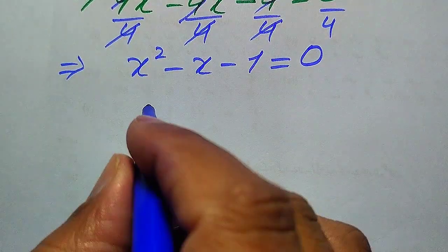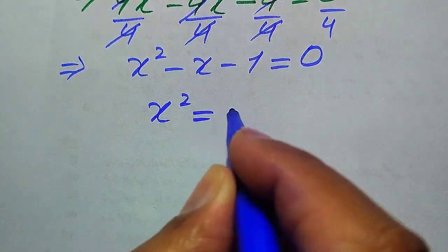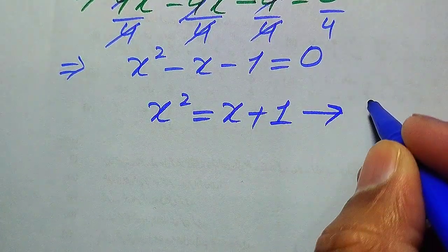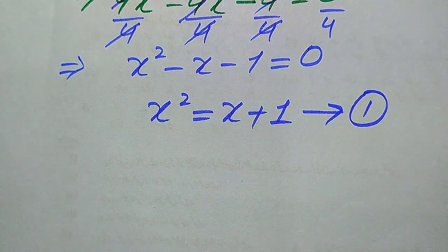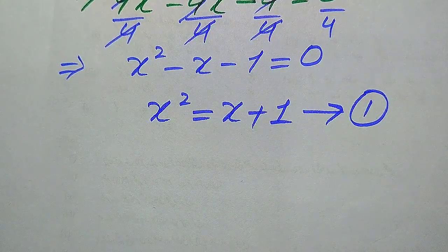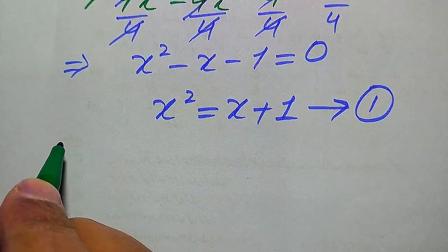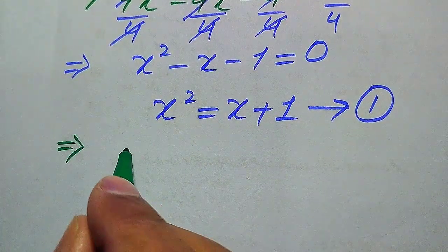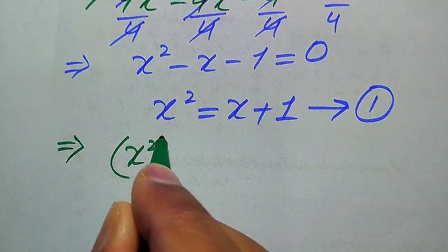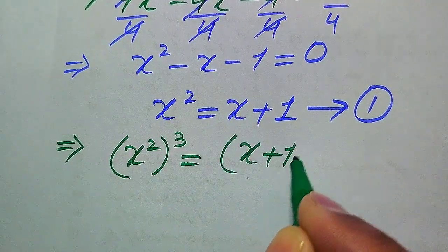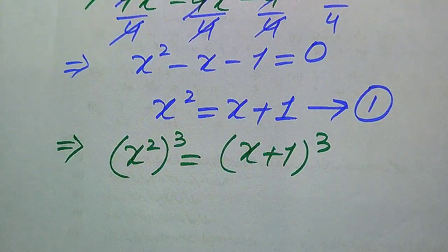From x² minus x minus 1 equals 0, we move minus x minus 1 to the right-hand side, giving x² equals x plus 1. We call this Equation 1. Our target is to get the value of x to the power of 12, so we first need to take a cube on both sides.